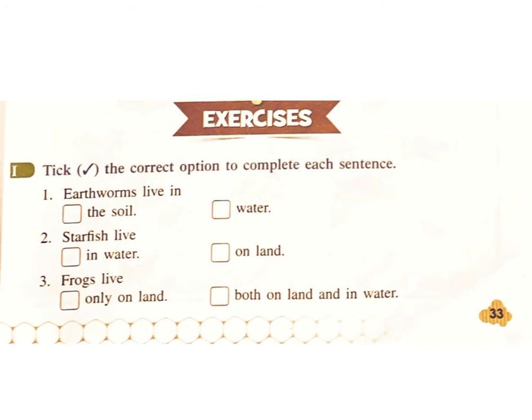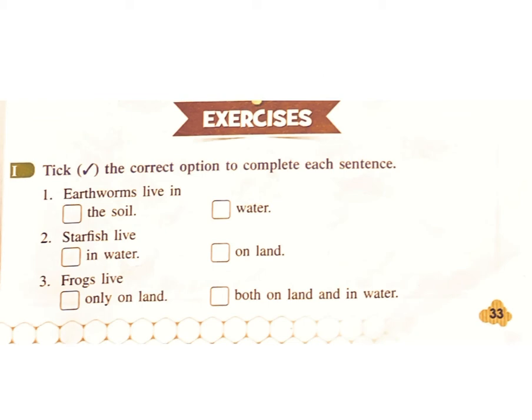Exercises. One: Tick the correct option to complete each sentence. One — earthworms live in: the soil, water. Answer: the soil. Two — starfish live in: water, on land. Answer: in water.